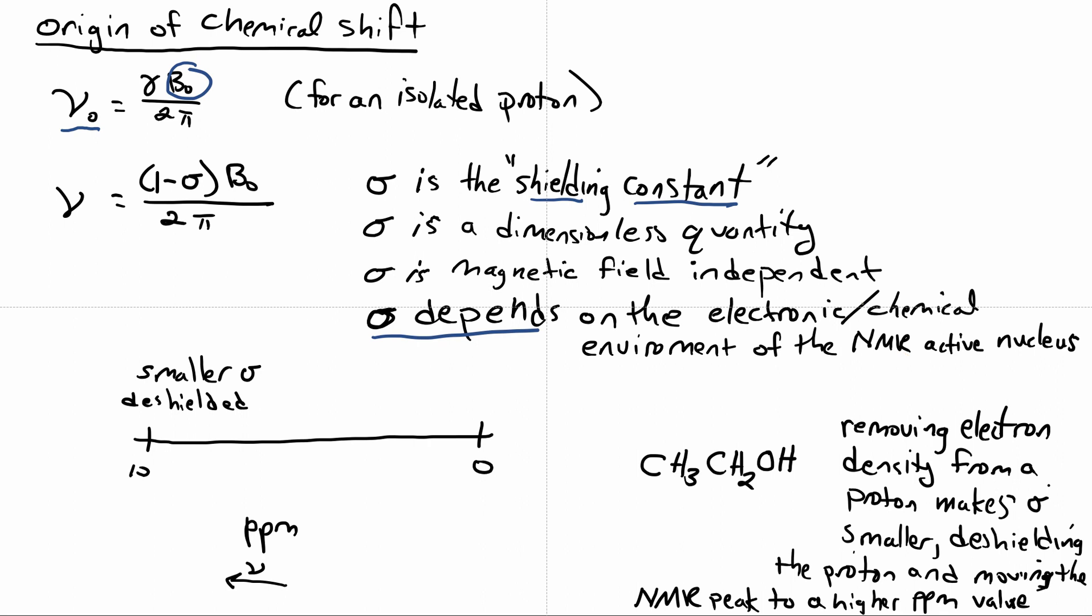So that's where basically for every different proton in a molecule, or different type of proton, you get a different chemical shift because it's going to have a different sigma value. And here I'm drawn out, you know, a typical NMR spectrum goes from 0 to 10 ppm.